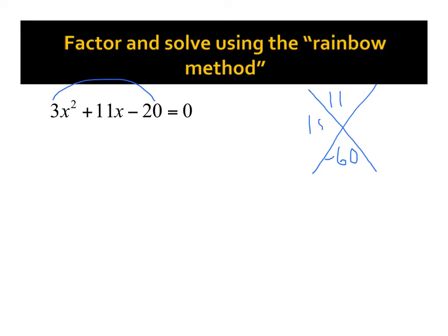Well, that would be 15 and negative 4. 15 times negative 4 is negative 60, we're multiplying to this, and we're adding to the 11 up top. 15 plus a negative 4 would give me 11.